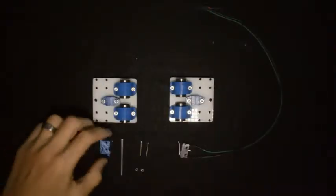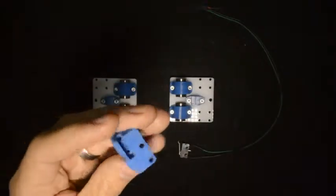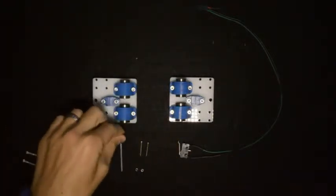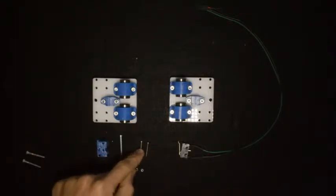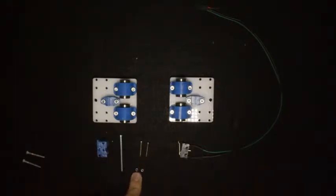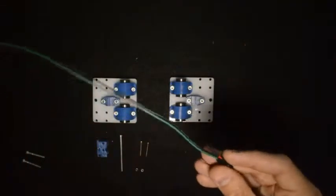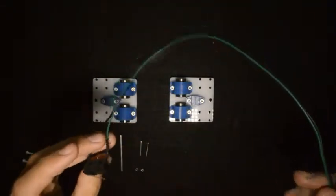For the next step, we will need this printed component, the M3 by 50 screw, two M2 by 20 screws, two M2 nuts, and the X-limit switch. That is the one with the 350mm cable on.